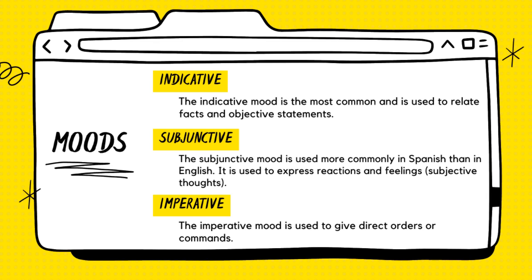Before we get started on commands, let's go over the moods. We have a total of three. The first is the indicative mood, which is the most common, and it is used to relate to facts and objective statements. Next, we have the subjunctive mood, and it is used more commonly in Spanish than in English. It is used to express reactions and feelings, kind of like a subjective thought.